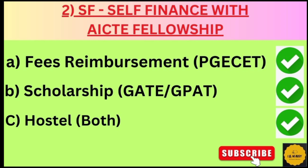The key difference between regular and self-finance with AICT Fellowship is that while both are eligible for scholarship and fees reimbursement, the fees structure of the college is different. For example, in a given college, the regular course may have 30,000 in fees, whereas the same self-finance with AICT Fellowship course may have 50,000. So self-finance students pay higher fees compared to regular students.